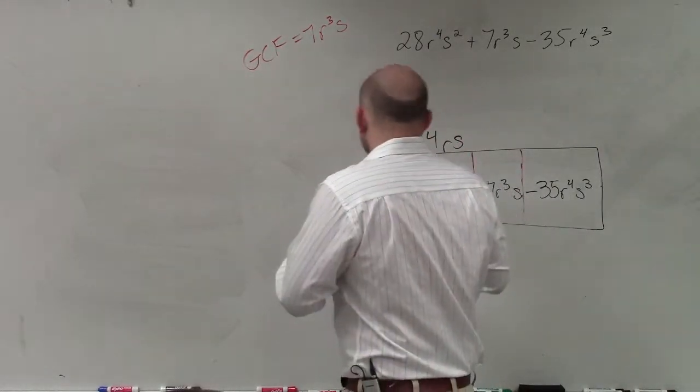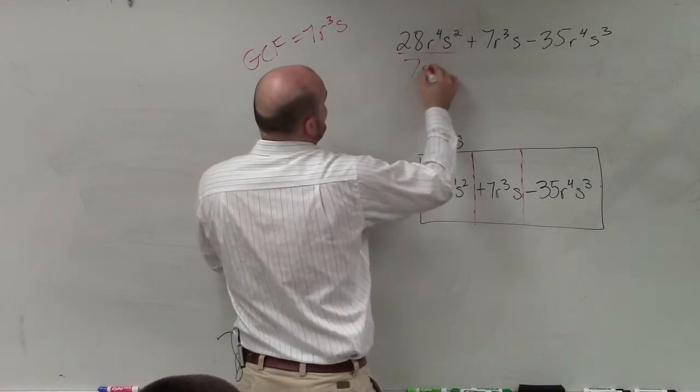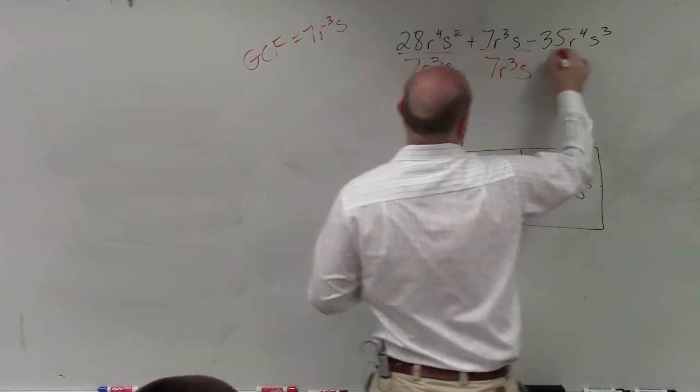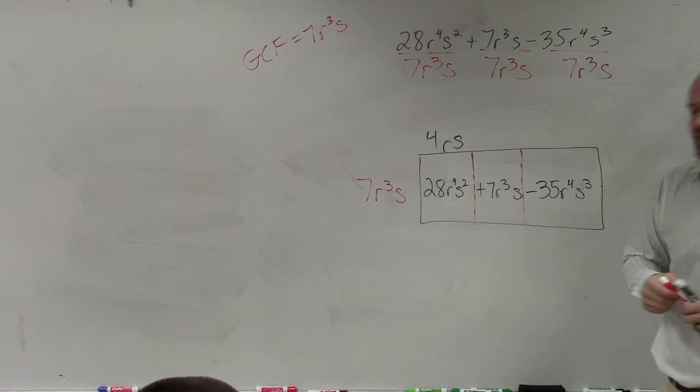Or you could also think about it this way. You can take your GCF and divide 7r cubed s, which your GCF is, by every single term. Now, let's look at what happens when I divide this out.